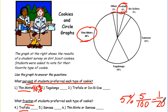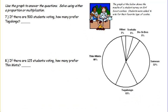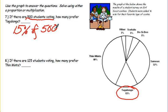You can also use this same information and use percent of a number to solve problems. For example, if 500 students are voting, how many would prefer tag-alongs? So here we have tag-alongs, 15% of 500 students. So we're trying to figure out how many of those would prefer tag-alongs.